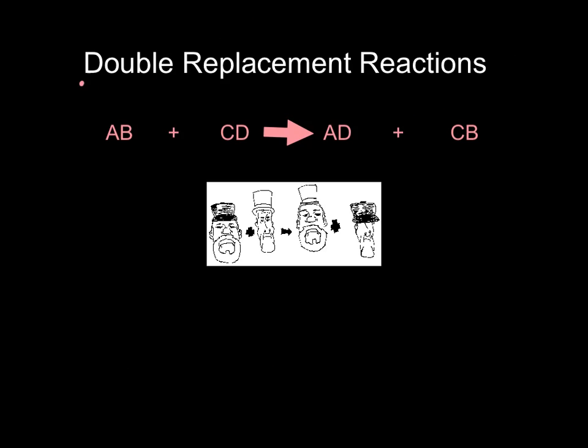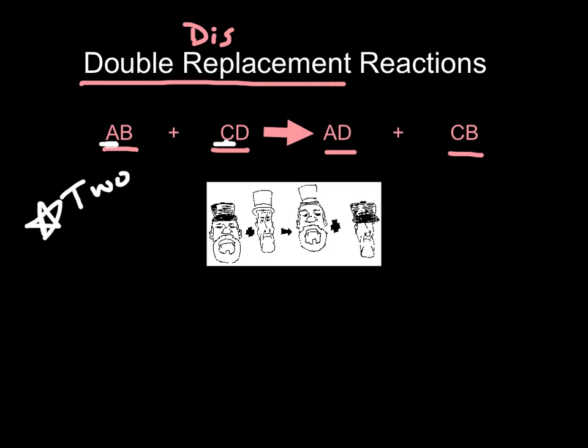Our next type of reaction is a double replacement reaction, also could be called double displacement. And if you notice what happens in our generic one, we had a compound, AB, and CD react with each other. And notice what happens. A now joins up with D, and C joins up with B. Now, take a look at this, though, because the metals are always written first. So the metal A and the metal C really switch partners with each other. They do the old switcheroo. Our key for kids in checking this one out is you might see two ionic compounds in reactants. If you see two ionic compounds in reactants, then probably going to be a double displacement reaction.